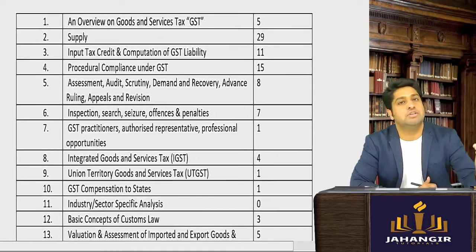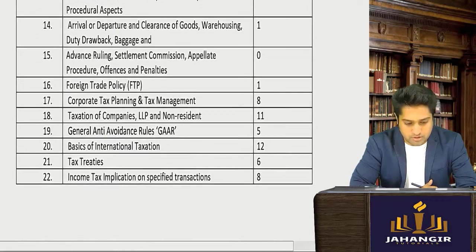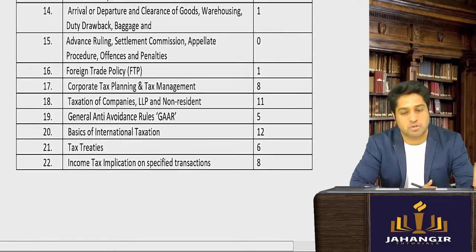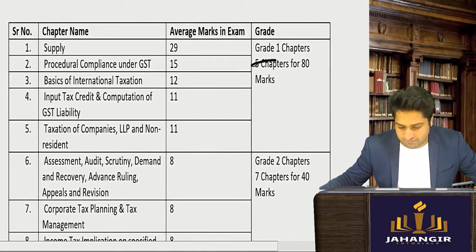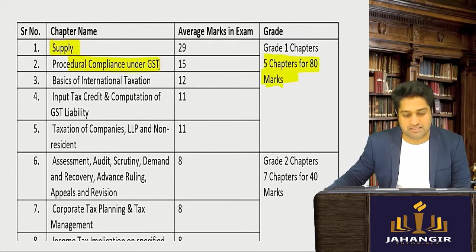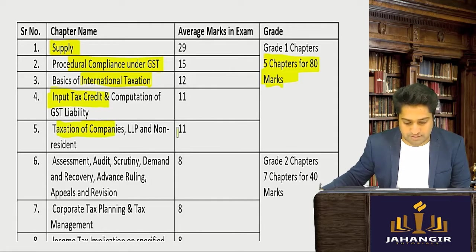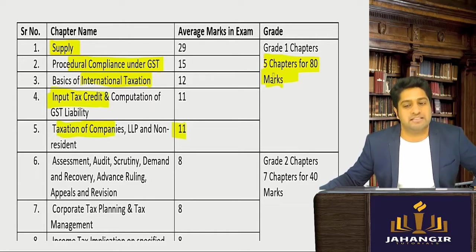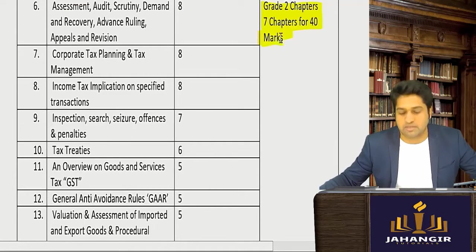Let's look at how many chapters there are and what marks each carries. I have divided the chapters into three grades. There are five grade one chapters in your exam which come for around 80 marks — that's supply, procedural compliance under GST, international taxation, ITC (since ITC short exam questions come with respect to sums), and taxation of companies for 11 marks.